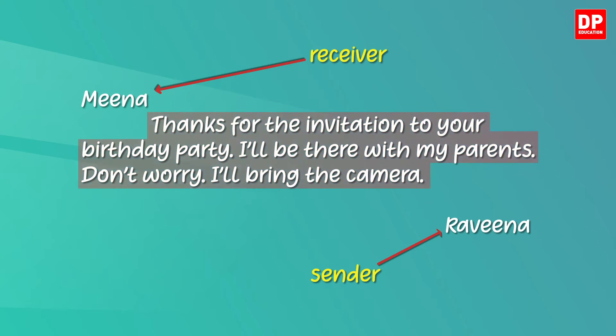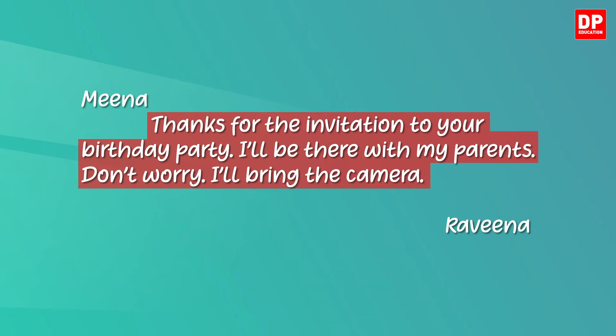What is the message conveyed? First, Raveena is thanking Meena for the invitation to her birthday party. Next, she informs that she is coming to the party with her parents. Also, she is informing that she will bring the camera along with her. I hope you noticed how the contractions are used in this note — you have 'I'll' in two situations and also 'don't.' They are all contracted forms.